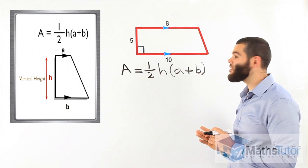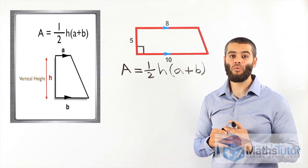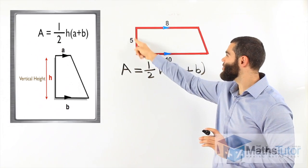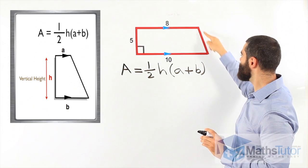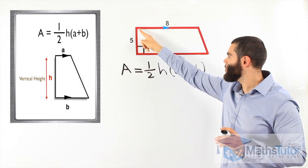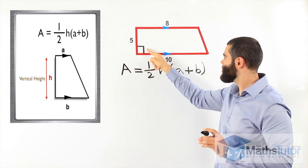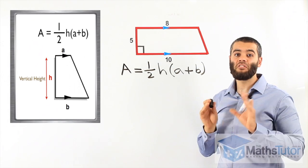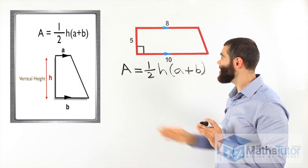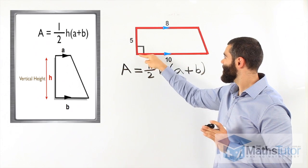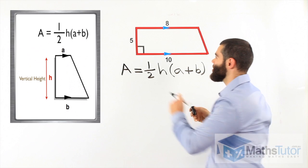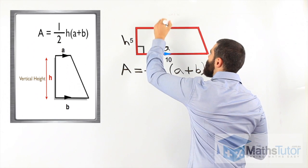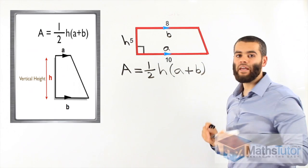The height is always the vertical height. When working with area and height, it is always the vertical height — straight down. This is the vertical height, not the slanting side. The vertical height meets the base at a right angle, so it is 90 degrees — it is perpendicular. That is our h. So this is our h, this is our a, and this is our b.